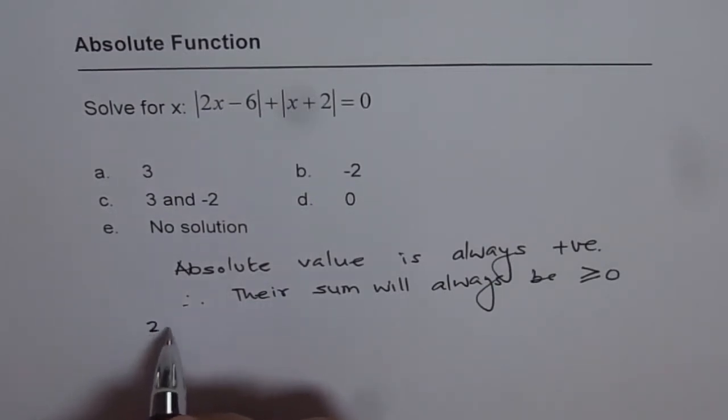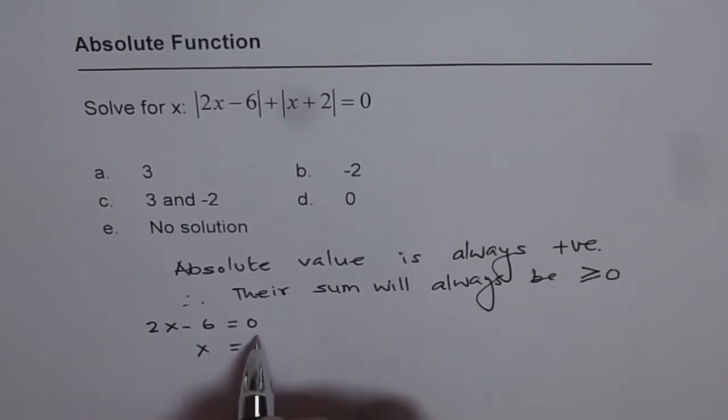So, we can say 2x minus 6 equals to 0 gives us x equals to 6 over 2, which is 3.